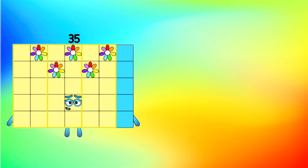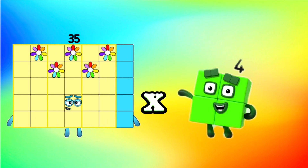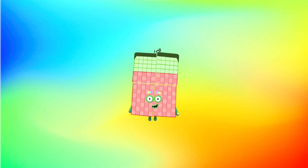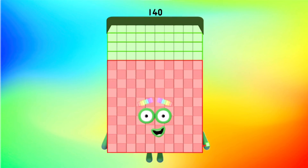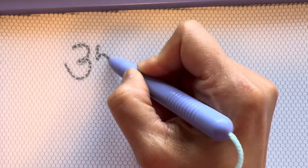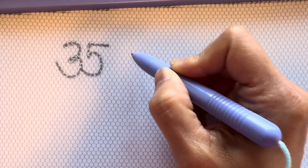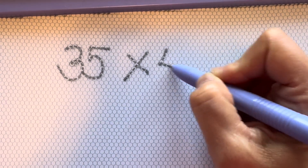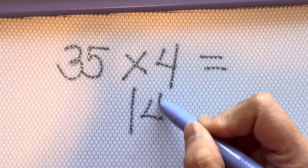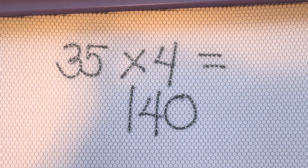35 multiplied by 4 is equals to 140. 35 multiplied by 4 is equals to 140.